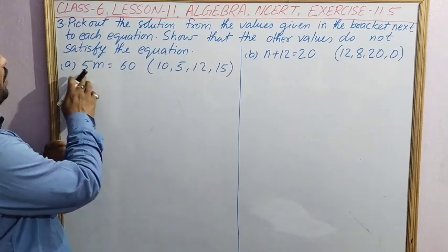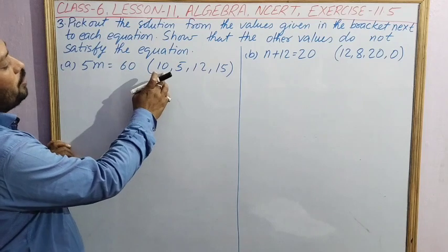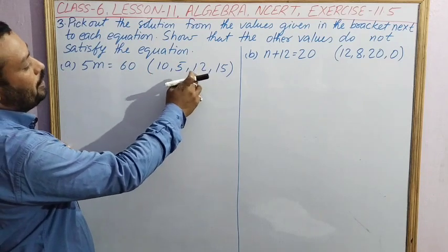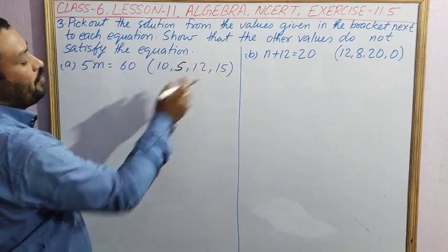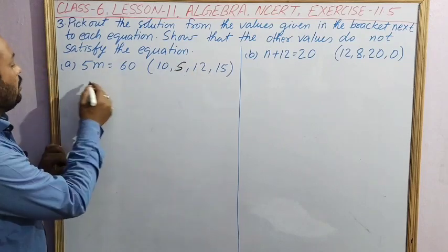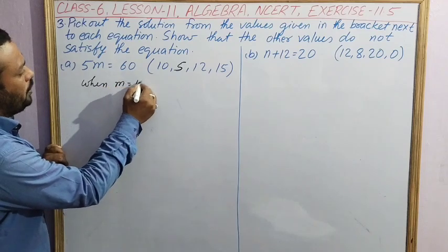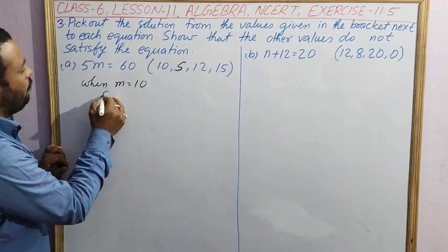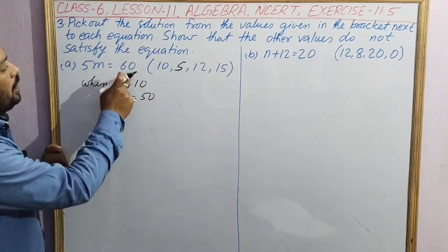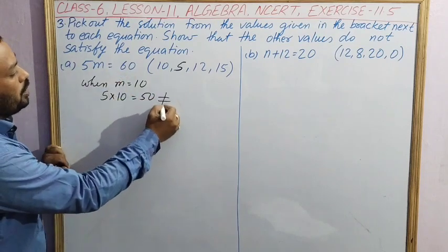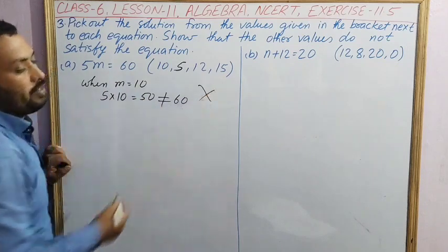First equation: 5m equal to 60. Values given are 10, 5, 12 and 15. When m equal to 10, 5 into m is equal to 50, but here it is 60. So this one is not equal to 60, it is not satisfying the equation. When m equal to 5, 5m equal to 5 into 5, that is 25. Here it is 60, but left hand side it is coming 25. So this one is also not satisfying.